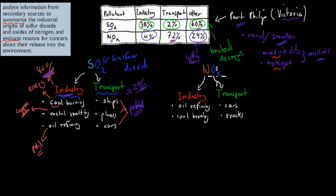Now, for the oxides of nitrogen, industry is oil refining and coal burning, so similar for sulfur dioxide. But the amount is very different.